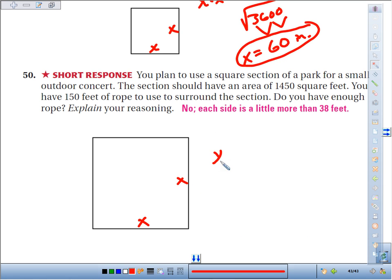To find the area, you take length times width, or x times x is x squared. We want to know, how can that equal 1,450? So basically, what's the square root of 1,450?